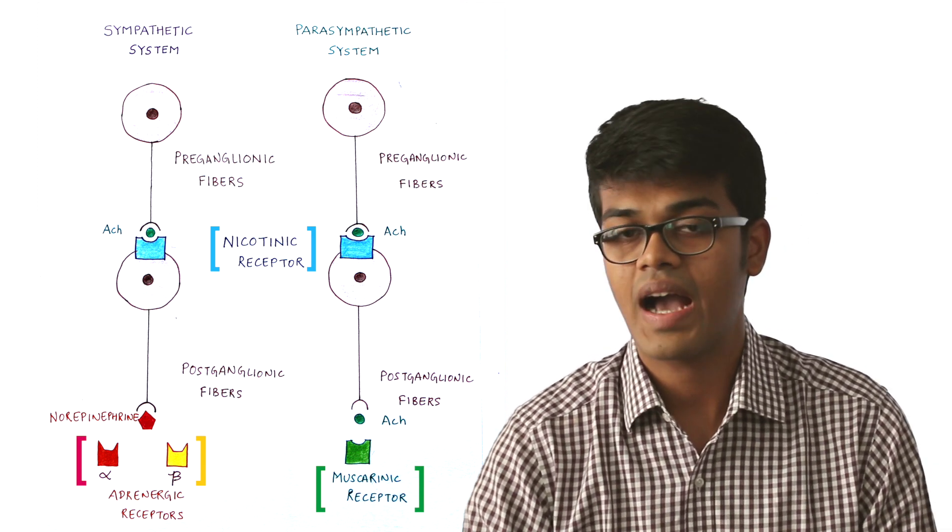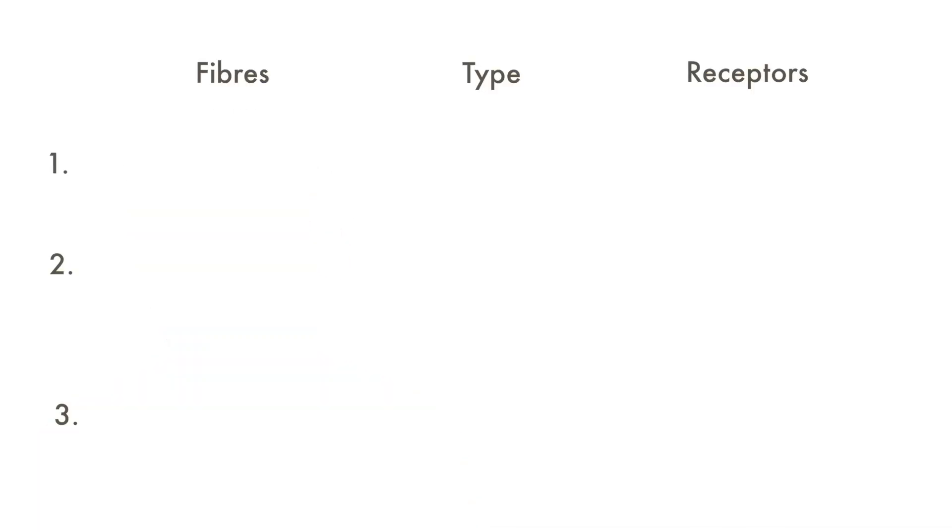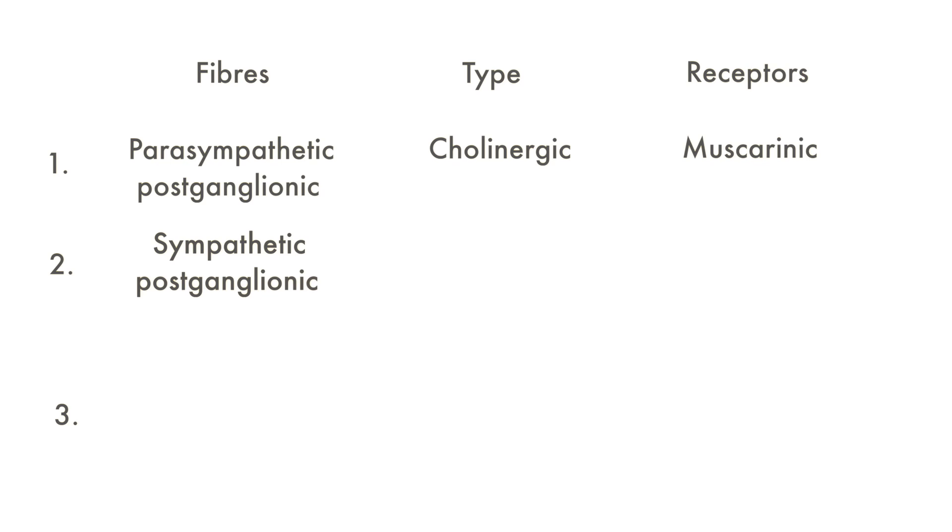Now there are three rules of the neurotransmitters that must be remembered. Rule number one: parasympathetic postganglionic fibers are cholinergic and act through muscarinic receptors. Rule number two: sympathetic postganglionic fibers are adrenergic and act through alpha or beta receptors. The exception is the sweat gland, which is innervated by sympathetic postganglionic fibers which are cholinergic in nature.